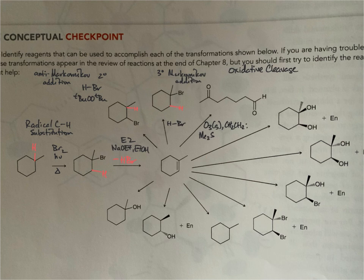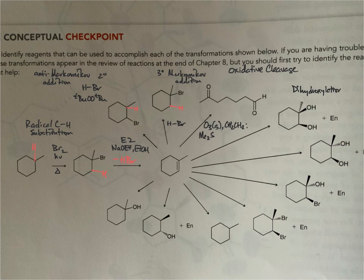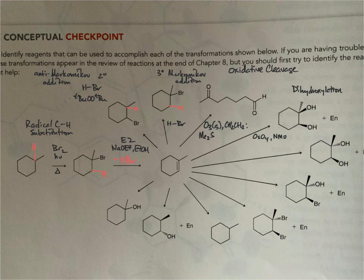In the next reaction, we're adding the elements of OH to each carbon, and notice the relationship — it's a syn addition. This is a dihydroxylation reaction. We can use osmium tetroxide to do this, and then we need a reoxidant, which is typically N-methylmorpholine N-oxide. That compound allows us to use a catalytic amount of osmium tetroxide, since osmium itself is toxic.